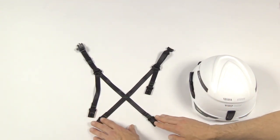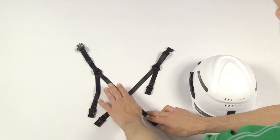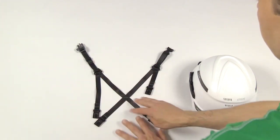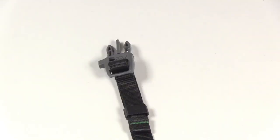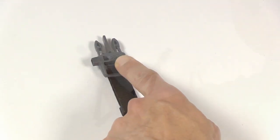To start, ensure that the chin strap is flat on the table with no twists and that the whistle buckle is on the left side.